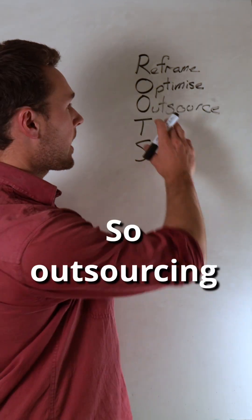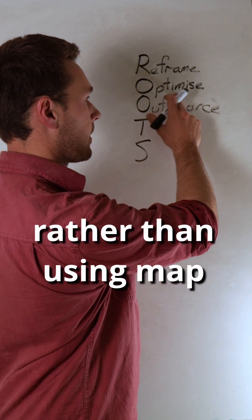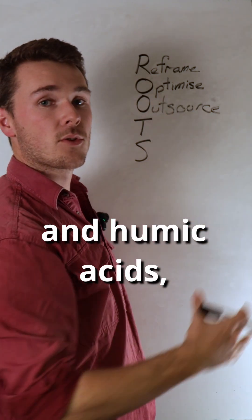which is Outsource. Outsourcing is changing the inputs to be more biologically friendly. For example, rather than using MAP and humic acids, we're using guano.